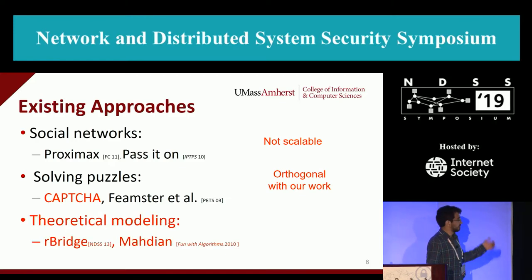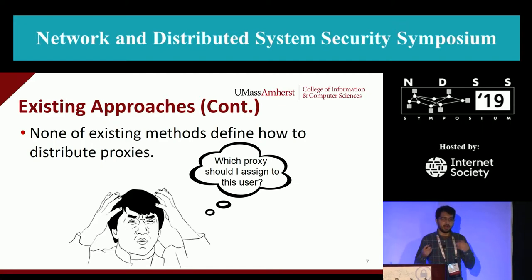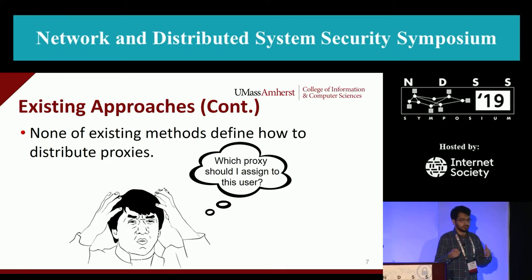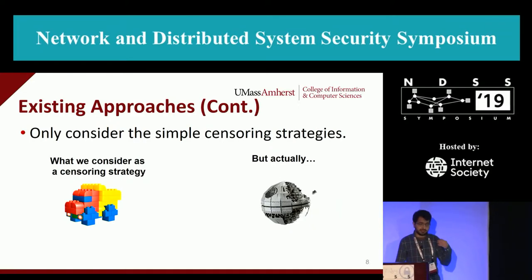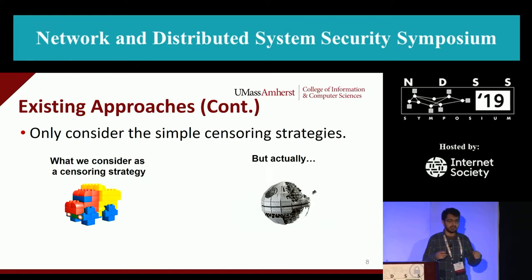We'll first look at the problems with current theoretical modeling works. None of the existing works say how to assign proxies to users — they give a score to a user and assign a proxy, but don't specify which proxy. You may have a high-bandwidth proxy; you don't want to waste it on a non-trusted user. Also, the current approach is to come up with a simplistic censoring strategy and then find a good assignment algorithm.